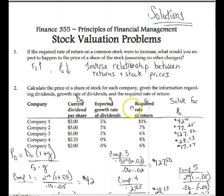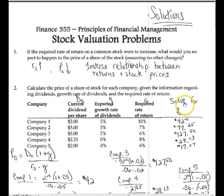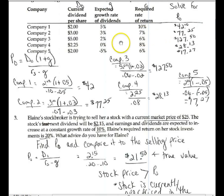Number two, I'm just going to voice over briefly because I think it's pretty obvious how you plunk it all into the equation. You calculate the price of a share of stock for each company given the information regarding dividends, the growth rate of dividends, and required rate of return. Current dividend per share is D sub zero — current, i.e. last dividend, most recent dividend, it's not the next or expected. The growth rate is G, the required rate of return is R sub S. Notice that for company four or five, you can have zero or negative growth rates and the equation works fine. There are downturns and bad years — that does happen on occasion.